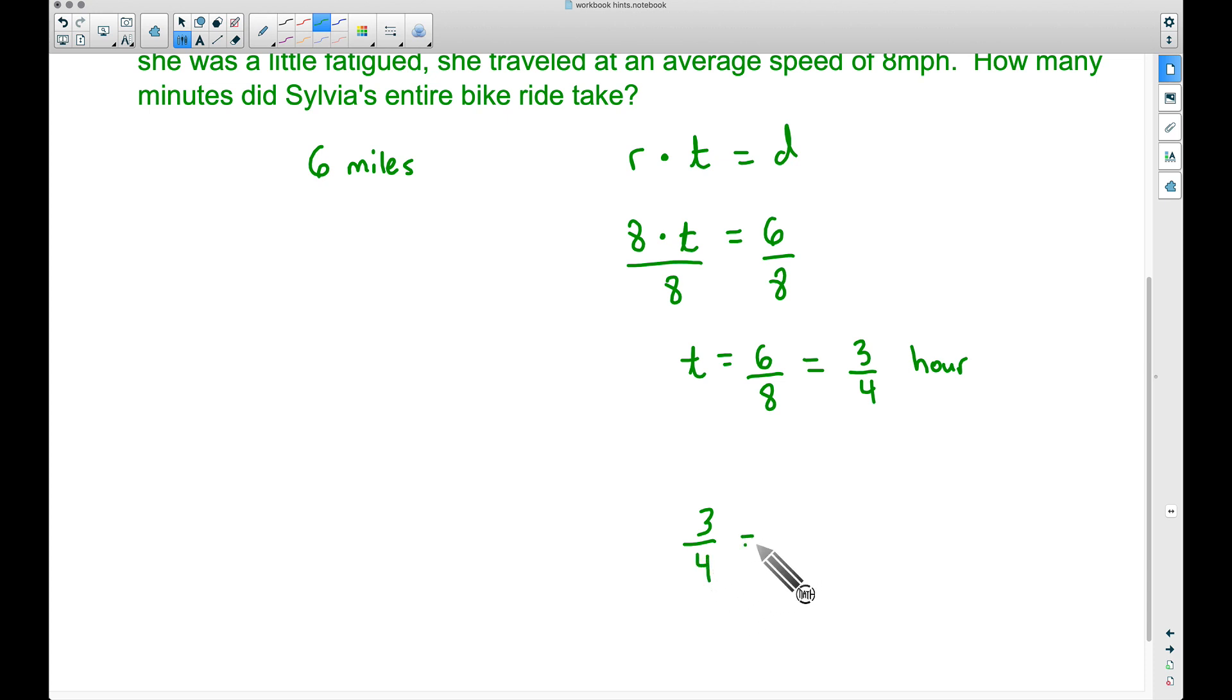But we want to figure out how many minutes did Sylvia's entire bike ride take. Well if you have hours and you're trying to figure out minutes, 3 fourths of an hour, one way to think about that is to write it as a fraction over 60. Now maybe you're thinking a proportion here, which is fantastic. But another way we could quickly do this is notice if we just multiply 4 times 15, 4 times 15 is 60, so 3 times 15, that's going to be 45. 45 out of 60, that's 45 minutes out of 60 minutes. That is 3 fourths of an hour.